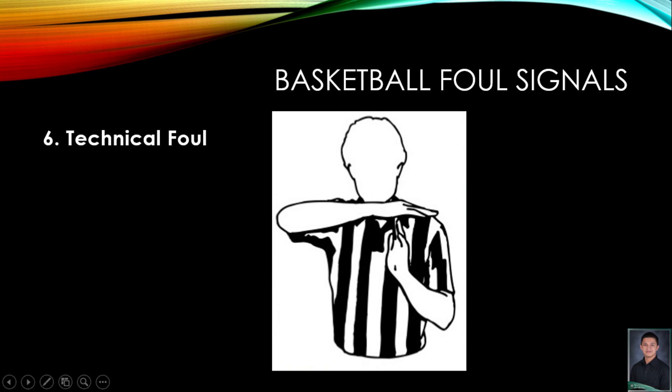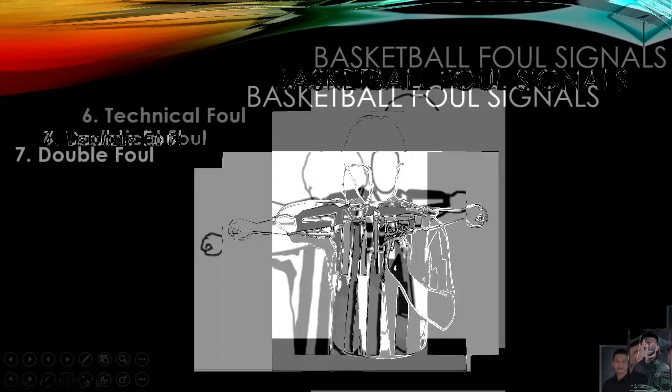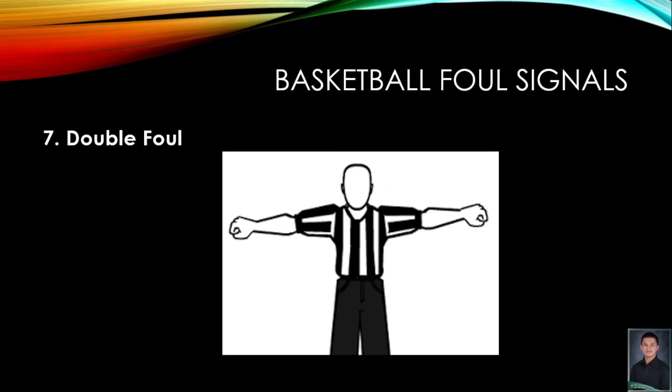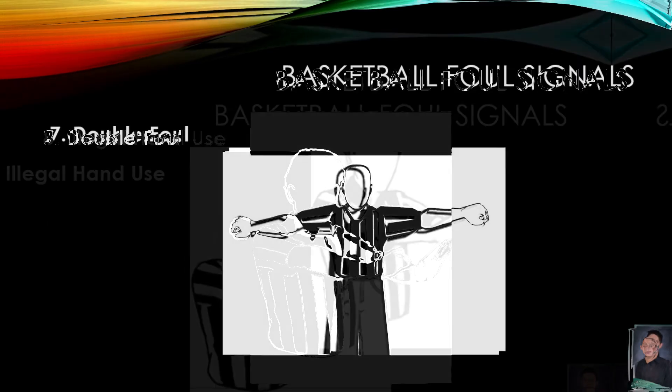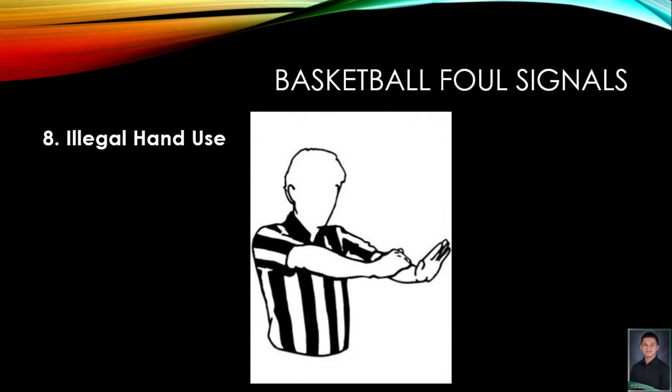The next one is the double foul. If two players have committed a foul at the same time, the referee will put both hands in fists extended outwards to the sides. And the last foul is the illegal hand use, or we call it illegal use of hands.